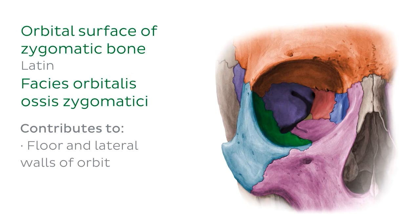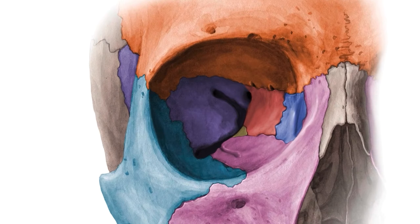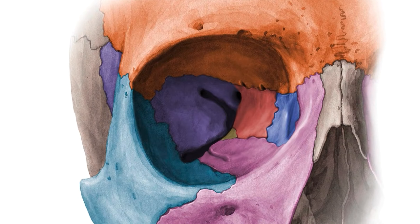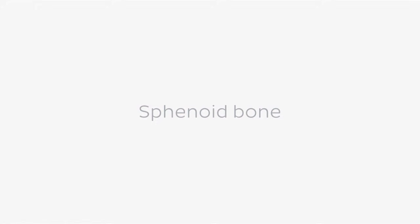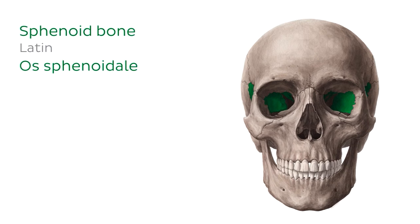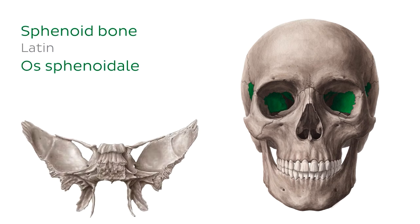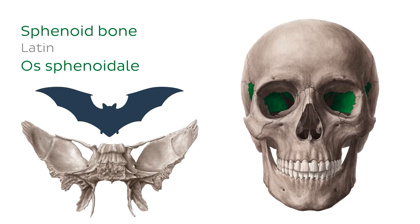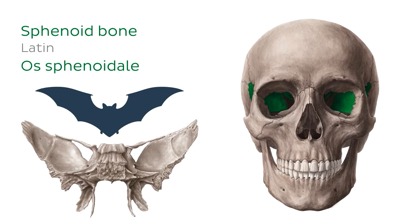We've now completed exploring the bones which form the anterior portion of the orbit. Let's turn our attention to the posterior wall of the orbit and take a look at the many bones which come together to form it. First up is the sphenoid bone — a large, irregular bone which contributes to both the orbital and cranial cavities. Its shape somewhat resembles that of a butterfly or bat with its wings extended, and it has several processes and landmarks which give it its unusual shape.